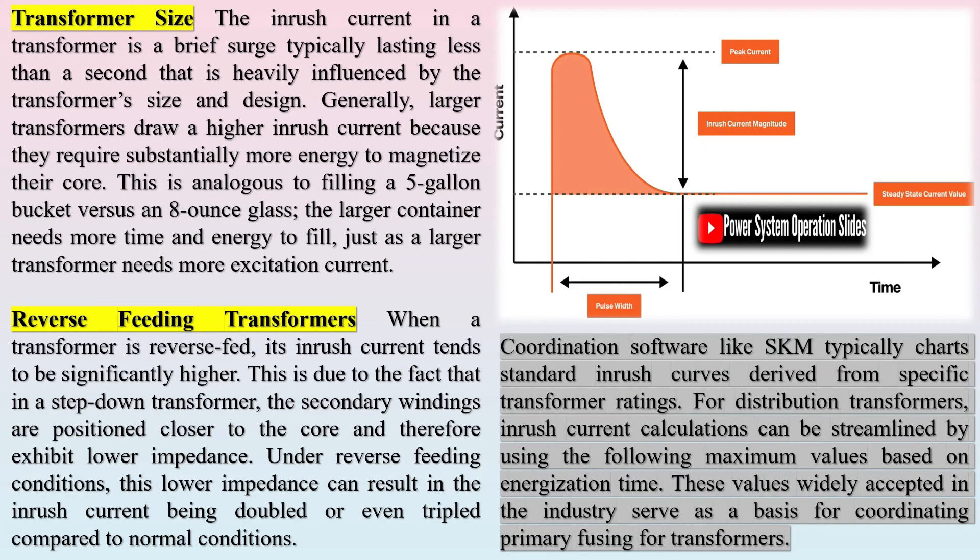Transformer inrush current is the surge of energy required to magnetize the core when the transformer is first energized. This initial burst of current is usually several times higher than the transformer's normal operating current, and its magnitude depends on both the design of the core and any residual magnetism present.